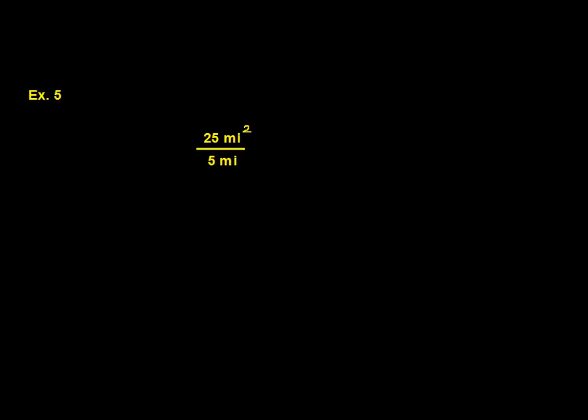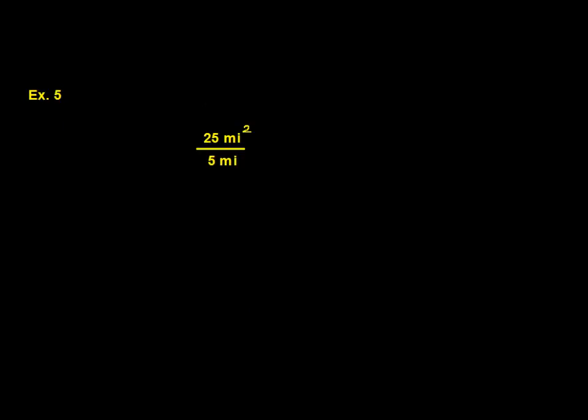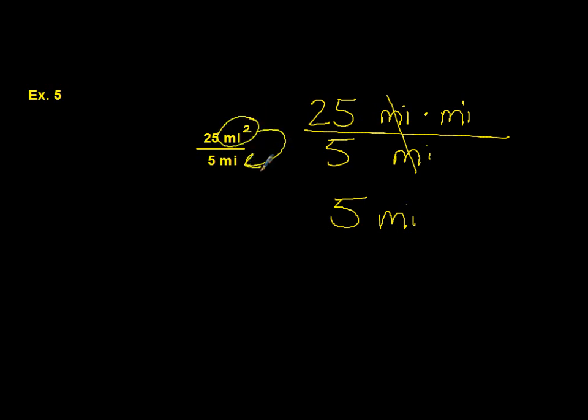Example number 5. Here we have the same type of thing. So we have 25 square miles divided by 5 miles. And we end up with 5 miles. Understanding again that we took square miles and changed it into linear miles.